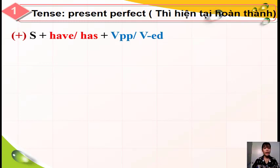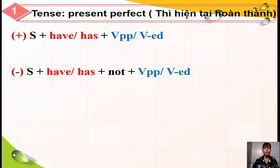Đối với thể phủ định, cô chỉ việc thêm 'not' vào phía sau 'have' và 'has'. Lúc này 'have' và 'has' giữ vai trò giống như một trợ động từ. Phía sau động từ vẫn là phân từ 2 hoặc động từ thêm '-ed'. Nhớ dùm cô, phân từ 2 là động từ ở cột thứ 3.